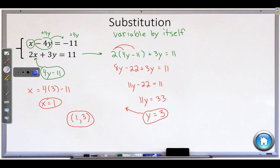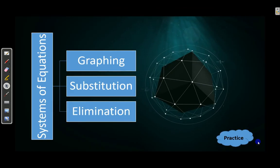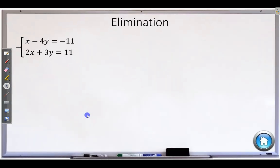One more to take a look at here. So we've done graphing and substitution. Last one is elimination. This is usually the easiest. You can do the most complicated problems with the least amount of effort. And so I'll show you how that works. This is the exact same problem. So we should get the exact same answer. We're just going to do it in a different way.